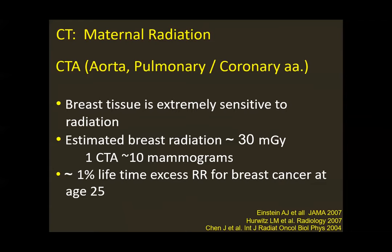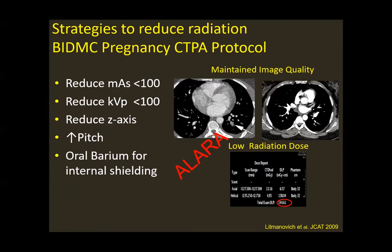I'd like to talk about maternal radiation, which is very important — if not even more important than fetal radiation. Breast tissue is extremely sensitive to radiation. Estimated breast radiation, if no precautions are taken, can be equivalent to more than 10 mammograms and might exceed the lifetime excess relative risk of breast cancer by one percent — especially in a young patient with very sensitive breast tissue during pregnancy. To reduce radiation, we need to adjust the protocol: mAs should be low, kVp should be low — when I say low, I mean 100 — and in the overwhelming majority of patients, those numbers will be sufficient to obtain very good image quality.